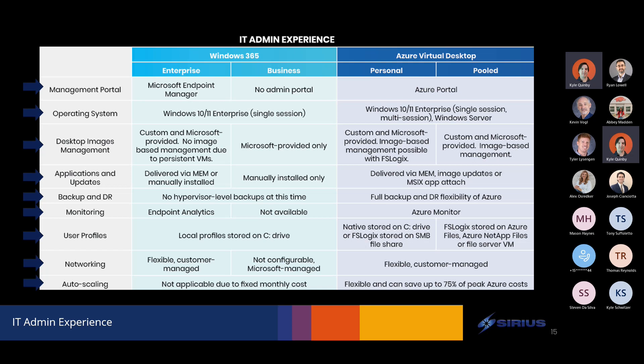Whereas on the AVD side, while Microsoft does provide some basic autoscaling scripts to shut things down on off-peak hours and bring them back up during peak hours, some of our partners — especially Nerdio, Citrix, and VMware — can really dynamically scale your hosts so that you're only running what you need to meet user workload demands, and then powering things off when not needed to save costs. That can provide a really significant cost savings on the AVD side while still giving you maximum flexibility.